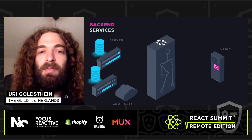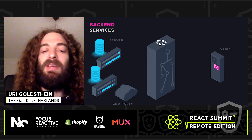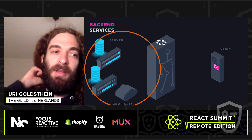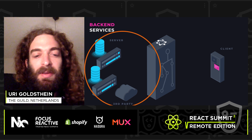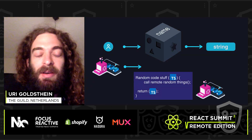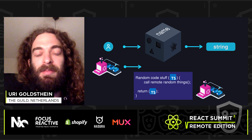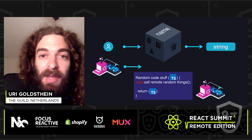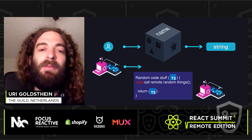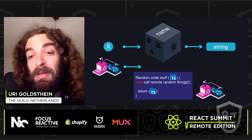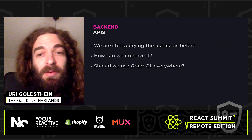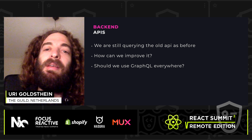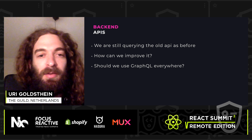But one thing that we sometimes forget is that we have type safety over the network, but what about all the old data sources that we keep on querying? In the resolver, I'm calling some REST endpoints that I used to call before. I don't have types for it, so I have no idea what's coming, and that can be a problem. So now that we have GraphQL on the front end, what can we do to make the backend even better and all the interactions we have with it?